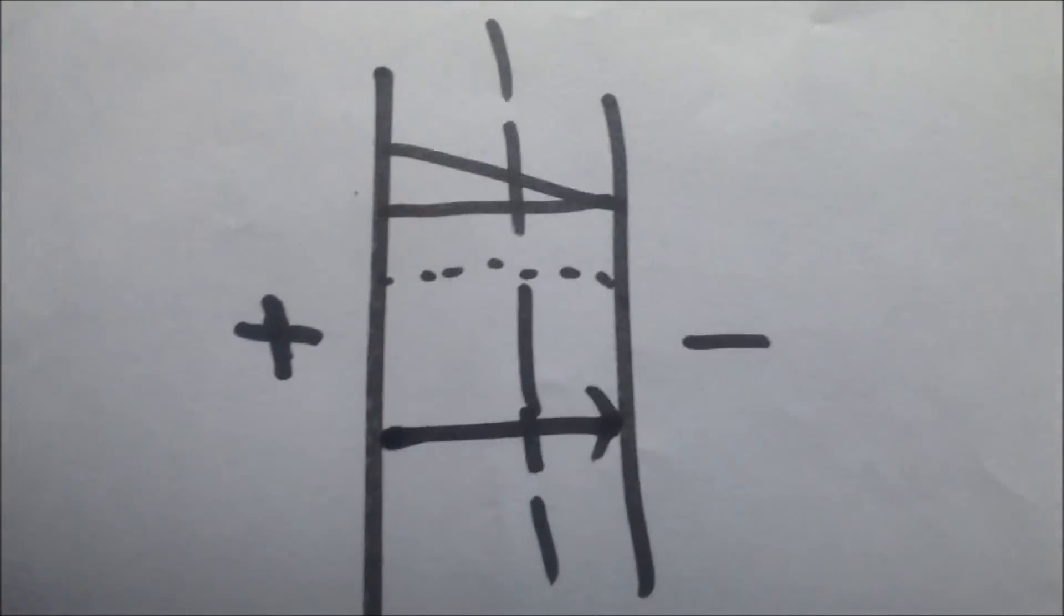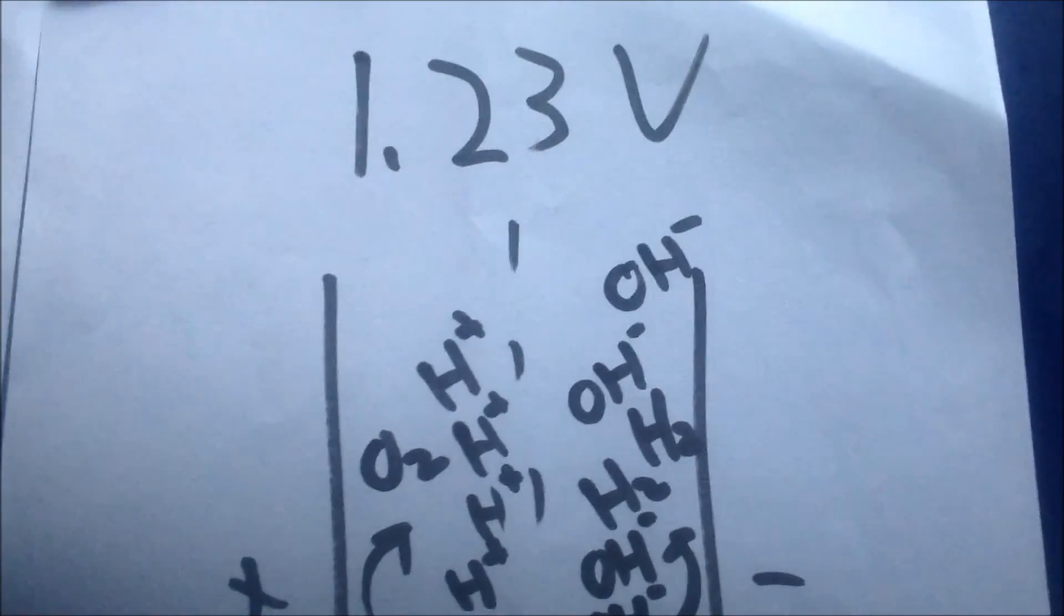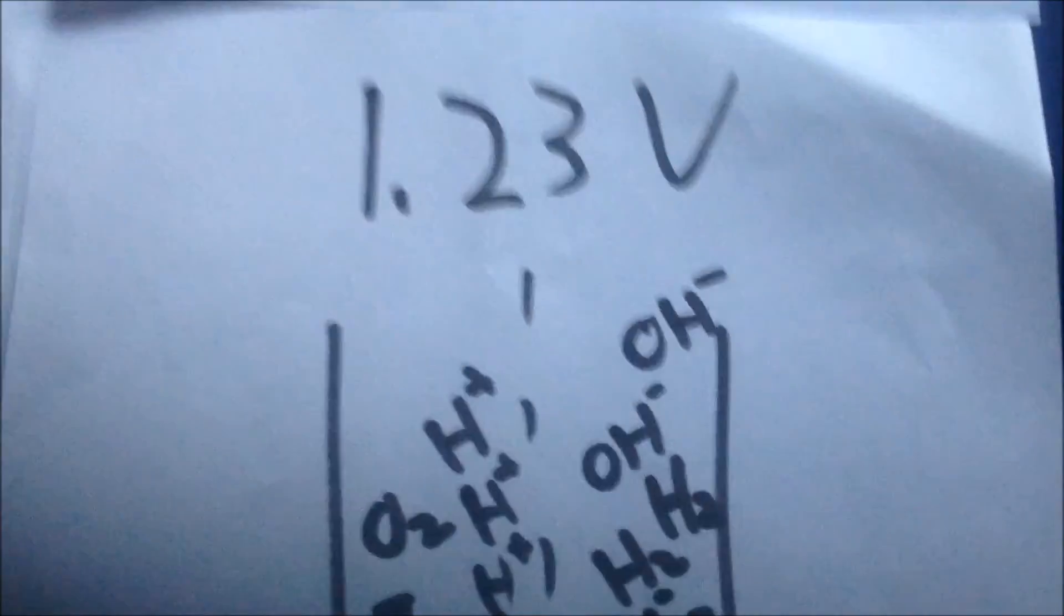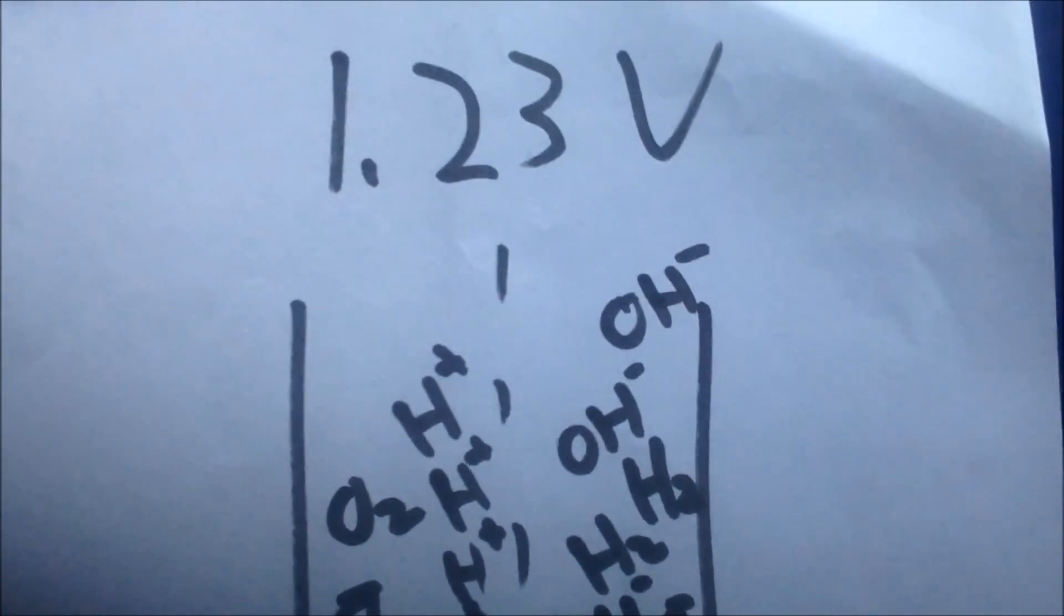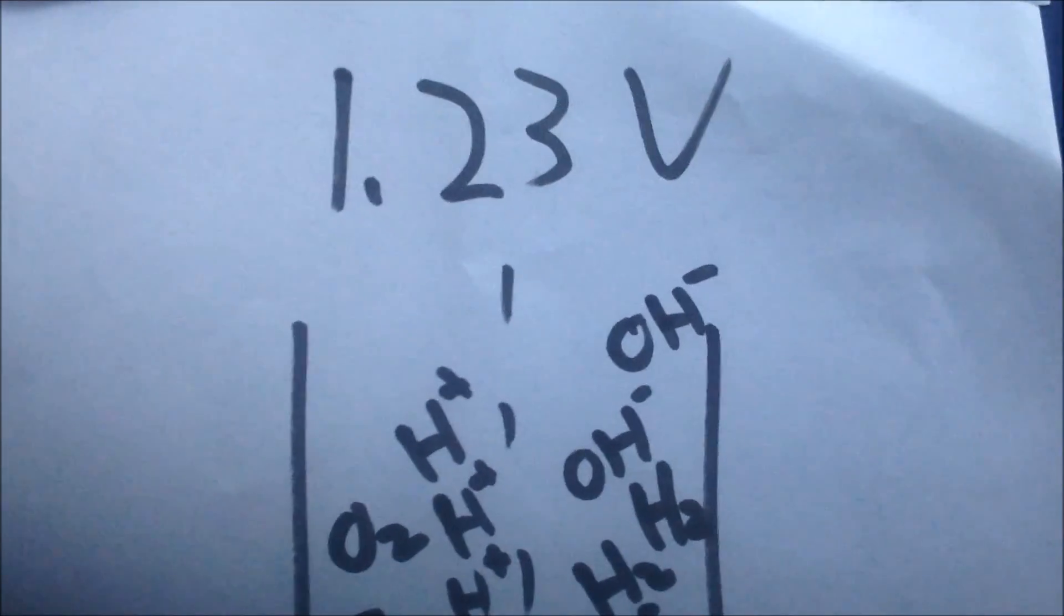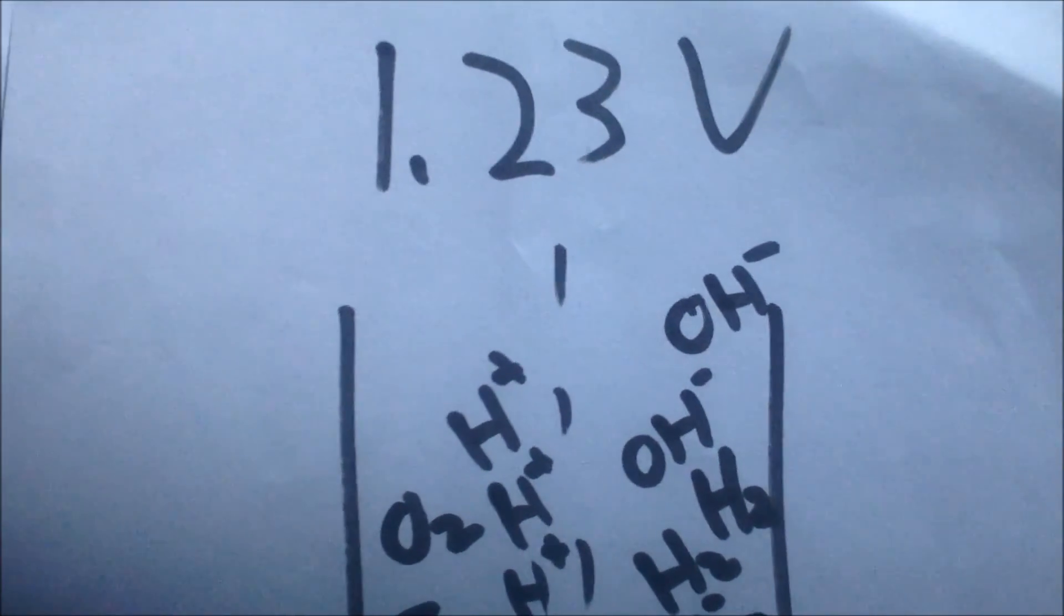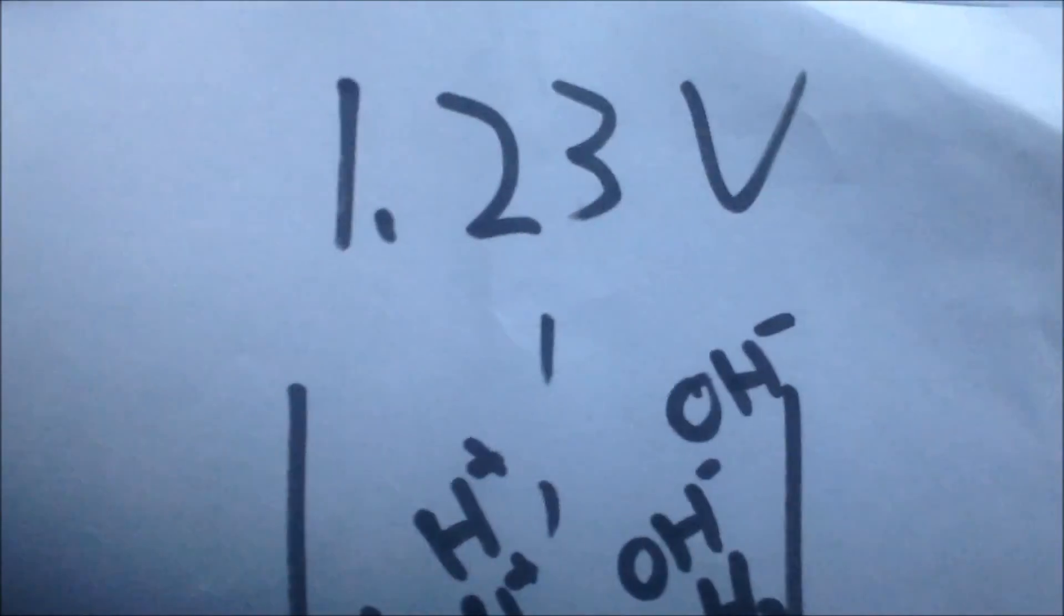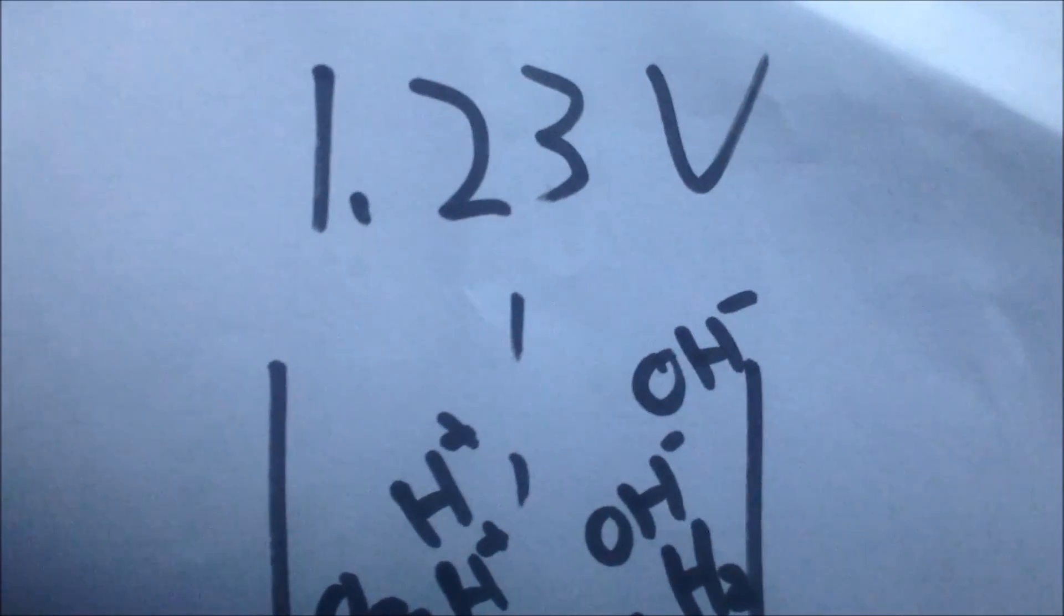Another reason why your supercapacitor might be self-discharging really fast is you might be overcharging it. What happens when you overcharge depends on the type of electrolyte you're using. For aqueous electrolyte, that is electrolytes using water as a solvent, the overcharging voltage is 1.23 volts because that's when water decomposes to form hydrogen and oxygen.